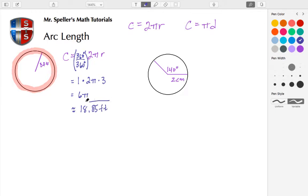Now we're not always going to be tasked to find the entire arc length. We're going to be tasked to find a part or a subset or subsection of the arc length. So in this particular example, we're finding the arc length of this section here.